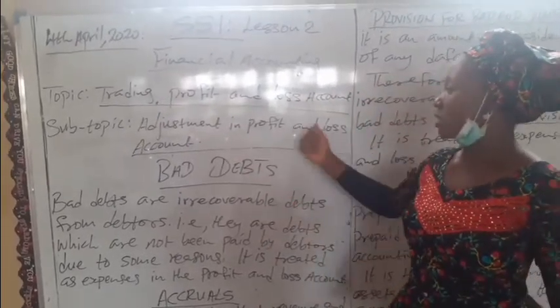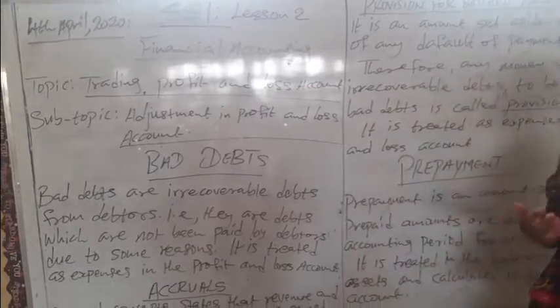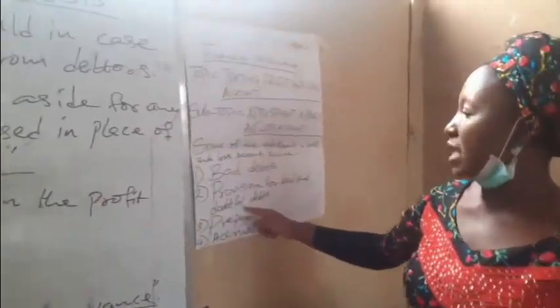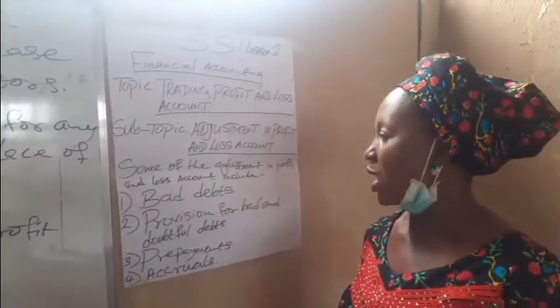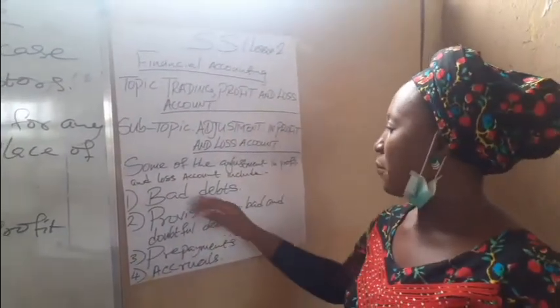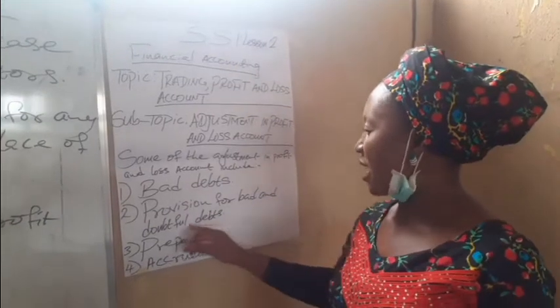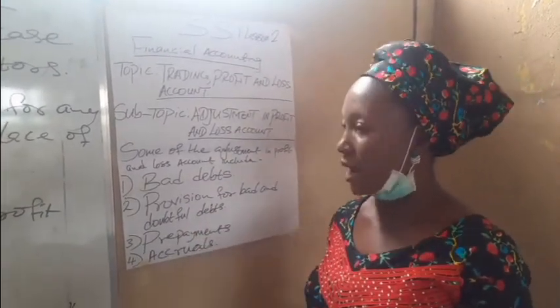From the adjustment in the profit and loss account, we are going to be covering: bad debts, provision for bad and doubtful debts, prepayment, and accruals.